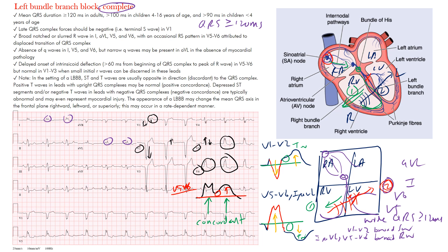Some causes of left bundle branch block include: idiopathic left bundle branch fibrosis and degeneration, aortic stenosis, hypertension, ischemic heart disease, heart failure, left ventricular hypertrophy, valvular disease, cardiomyopathy, anterior myocardial infarction, myocarditis, hyperkalemia, and digoxin toxicity, among others. Left bundle branch block is always a pathologic finding and is associated with adverse cardiovascular outcomes due to impaired left ventricular function.